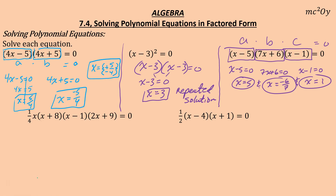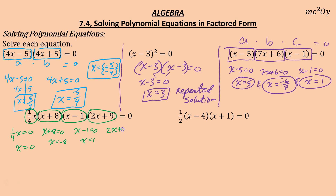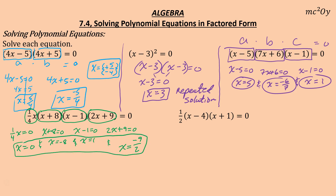This next one has four factors, all containing x's. Setting (1/4)x = 0 gives x = 0 — don't let the fraction scare you. Setting x + 8 = 0 gives x = −8. Setting x − 1 = 0 gives x = 1. Setting 2x + 9 = 0 — subtract 9, divide by 2 — gives x = −9/2. In set notation, the solutions are {−8, −9/2, 0, 1}.